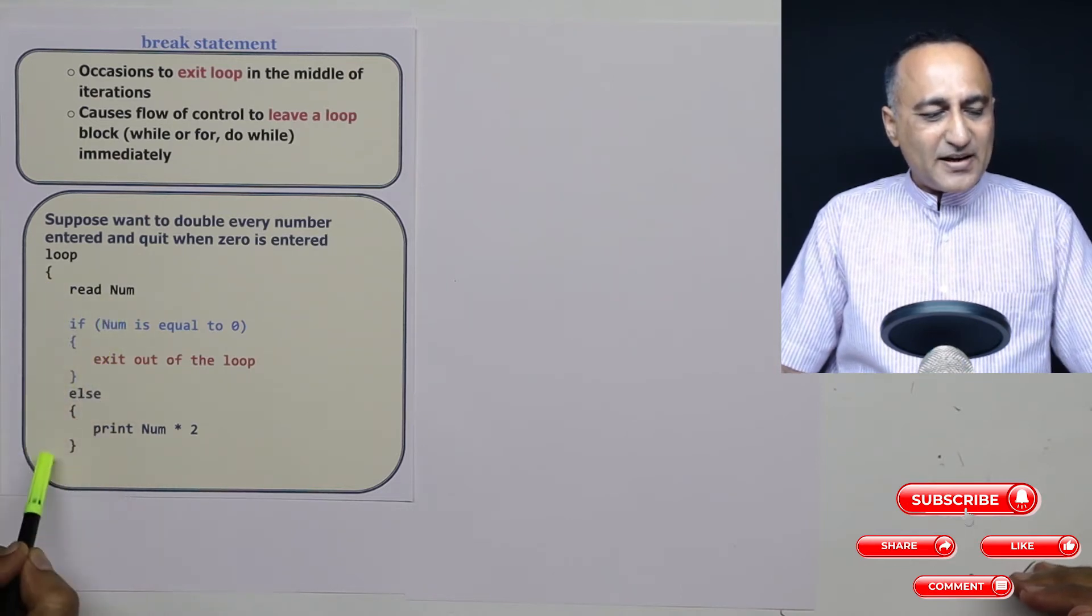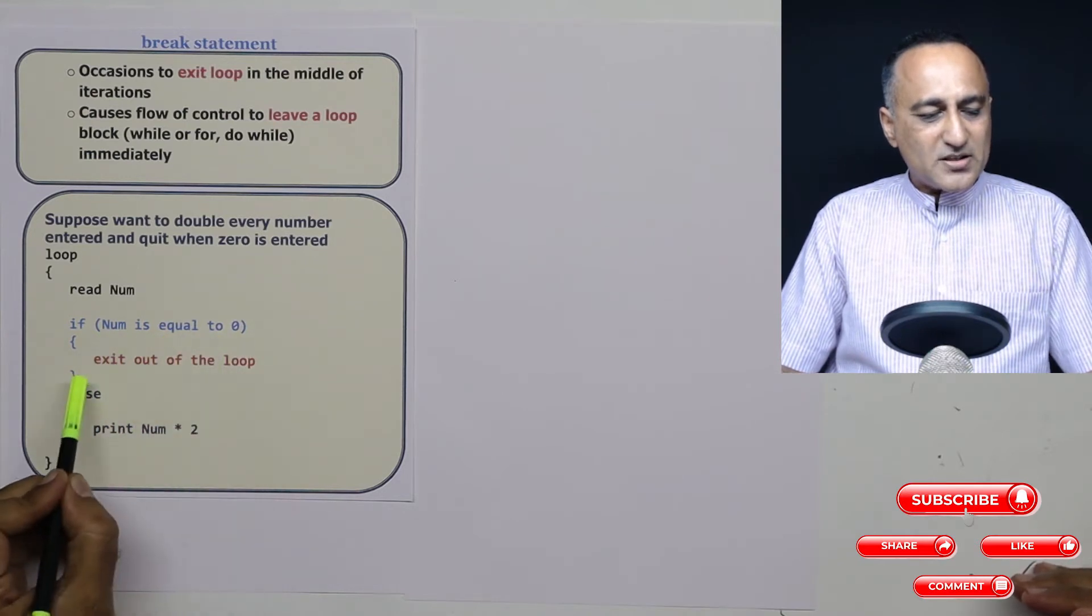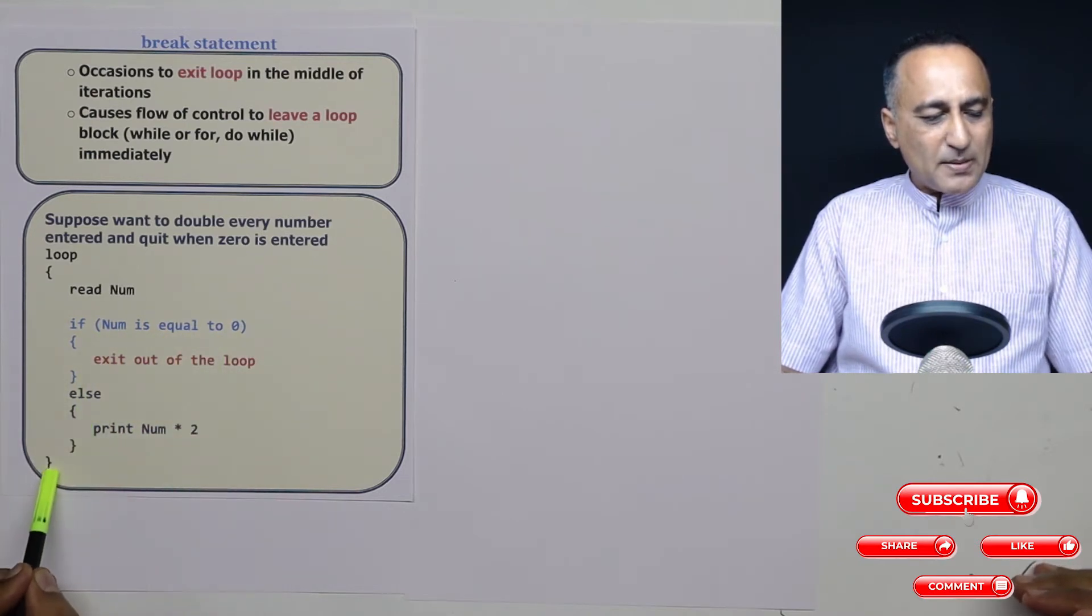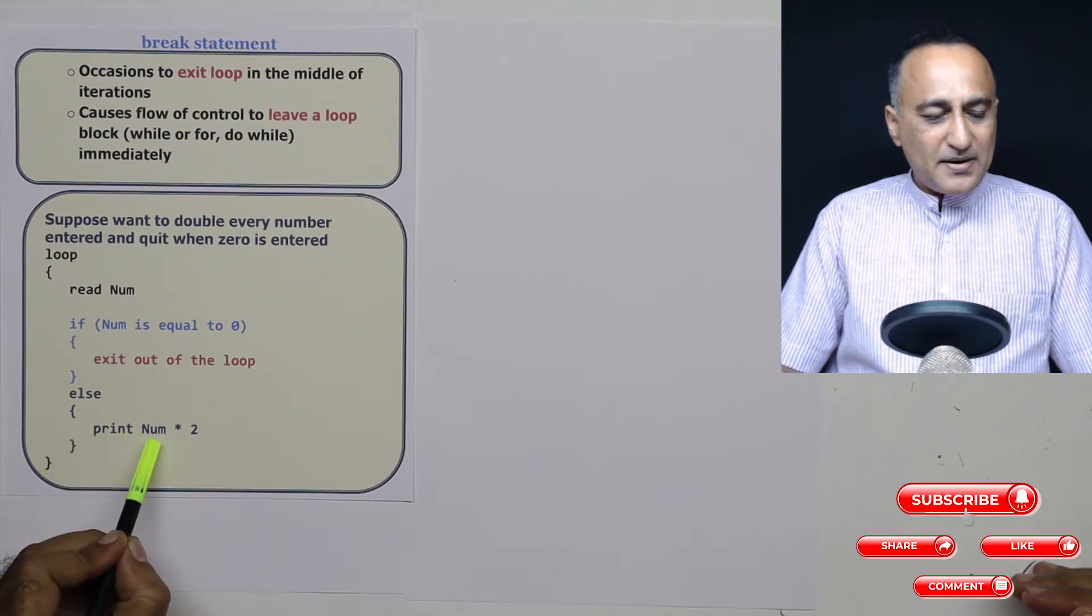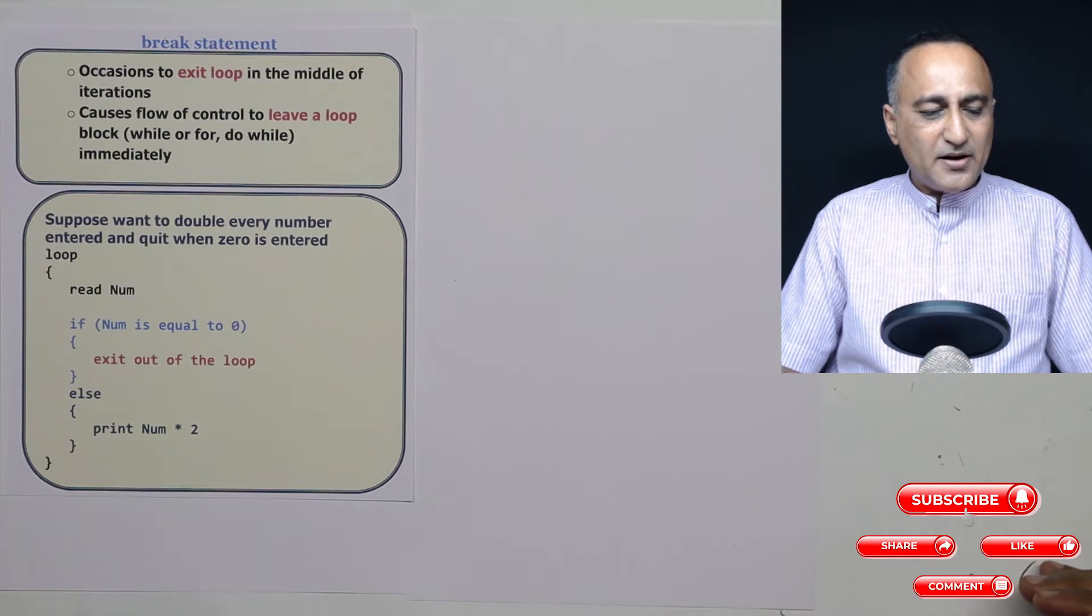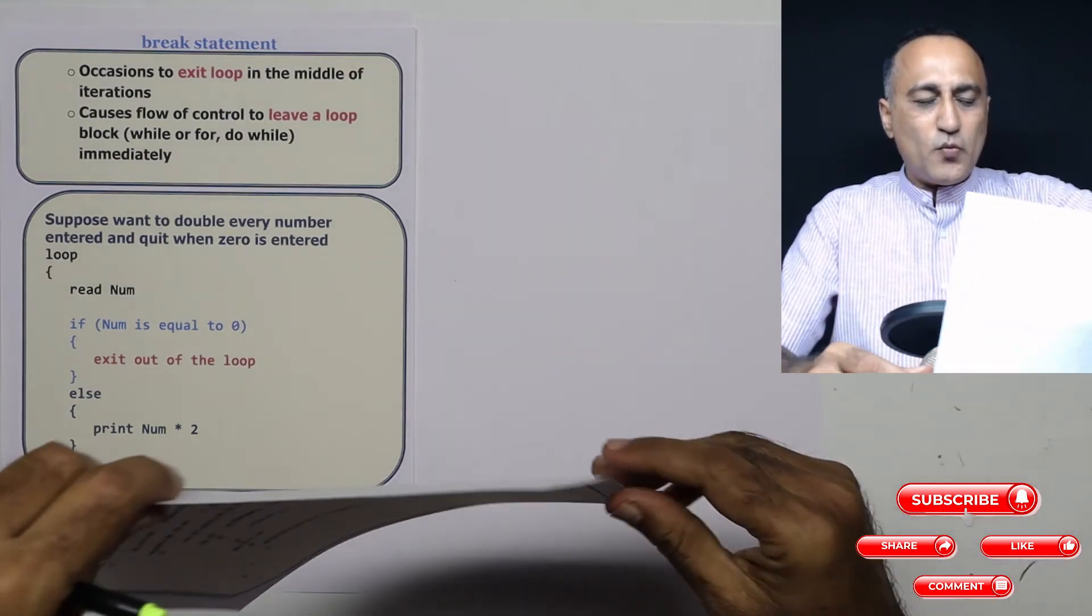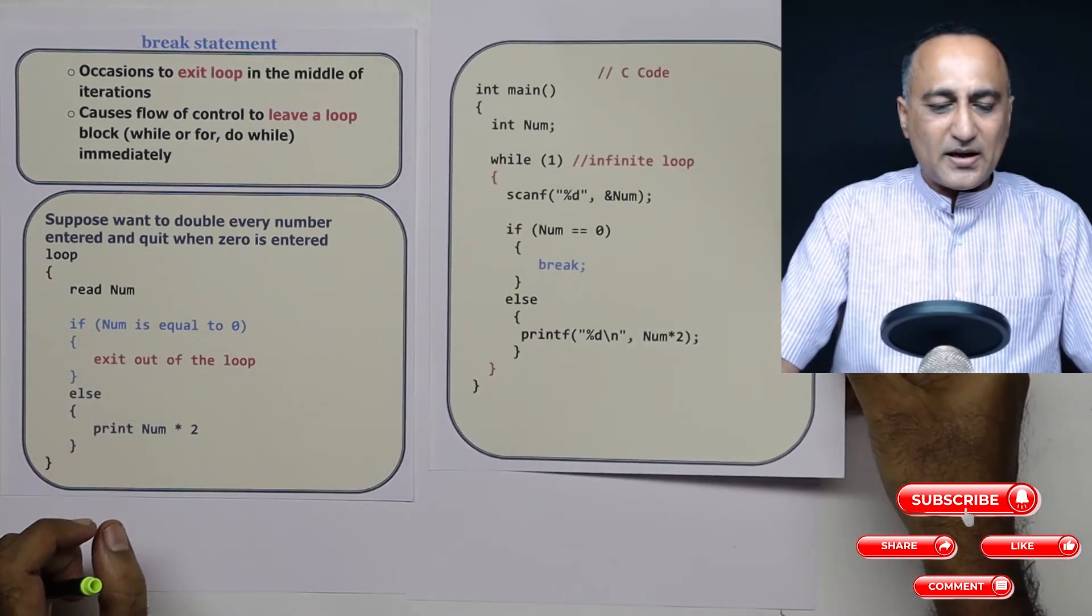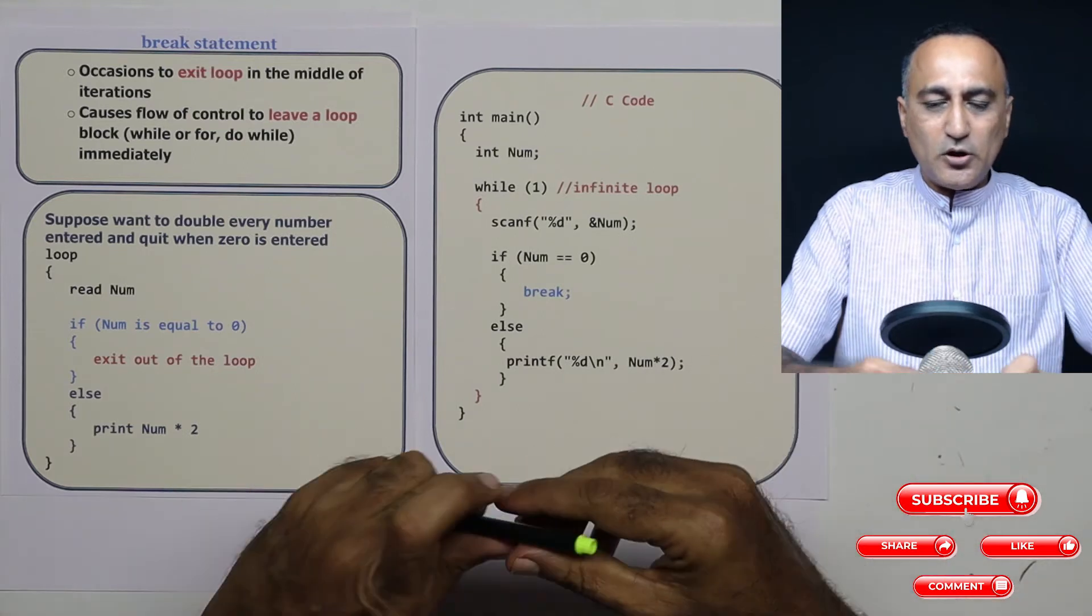I will keep doing this endlessly but the minute a user enters zero, I am going to come out of that particular loop. So in the body of the loop at the top I am reading a number. This is an infinite loop. So if the number is equal to zero, straight away I am exiting the loop. If the number is a nonzero number, I am taking the number and multiplying it by two. This is how the code is going to look.